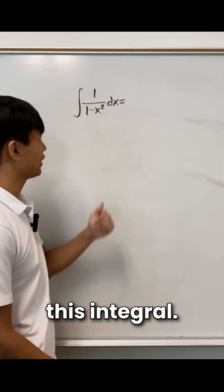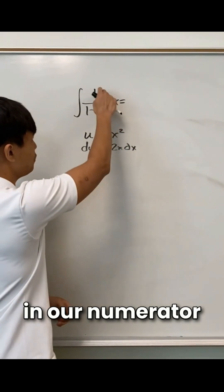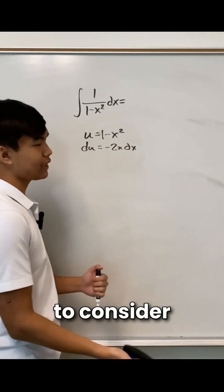Let's use partial fraction decomposition to solve this integral. If you try to go about it with u-substitution, you'll see that we don't have enough x in our numerator to make this happen. So we need to consider another method.